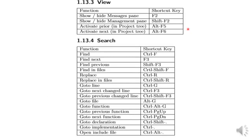For search, you can find a particular word or phrase using Ctrl+F. To go to the next occurrence of a word, use F3. You can go to a particular line with Ctrl+G. You can go to a function or file with Alt+G. You can open an included file using Ctrl+Alt. You can replace with Ctrl+R, and replace in files with Ctrl+Shift+R.